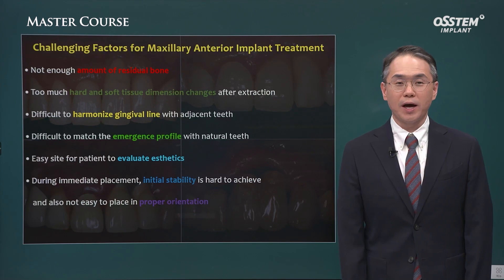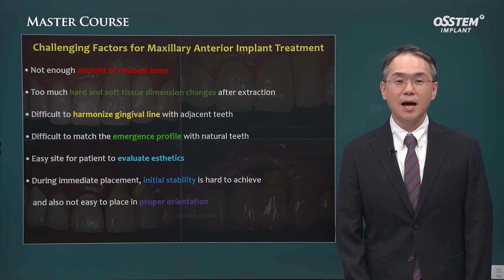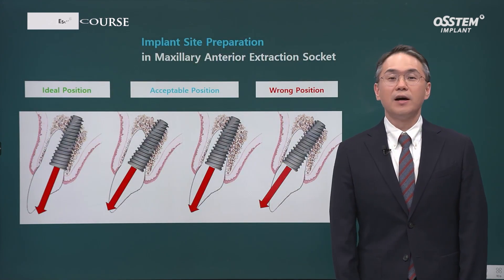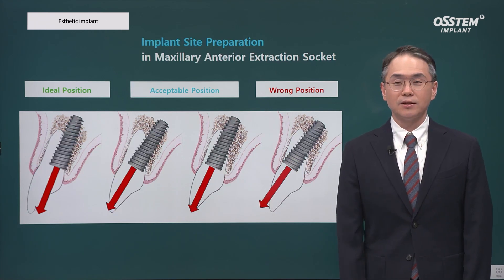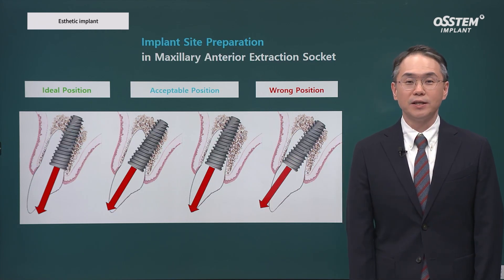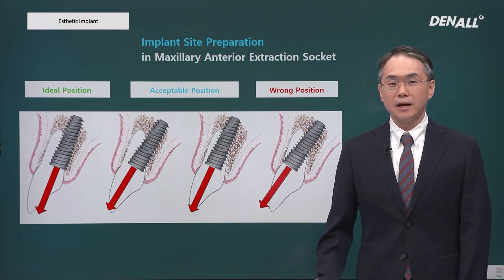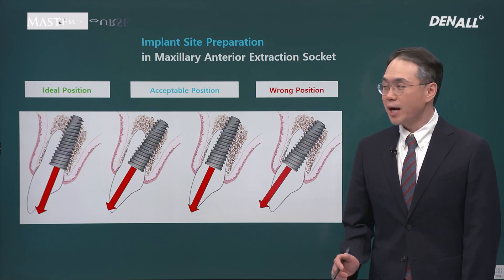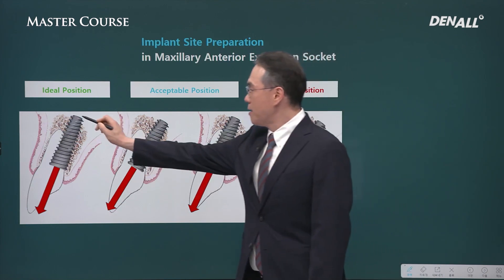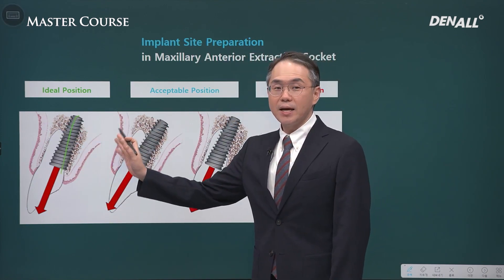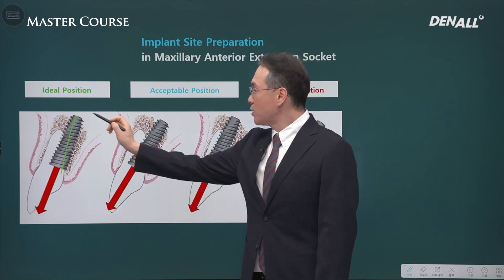As we drill on the extraction socket or as we place the implant, the position of the implant can deviate from the ideal position. In order to maximize aesthetics in the upper anterior implant case, position is most important. Angulation is quite important as well. In my opinion, the ideal position should be more bodily palatal compared with the inclination of the overall root.